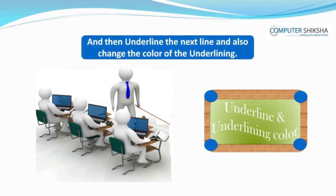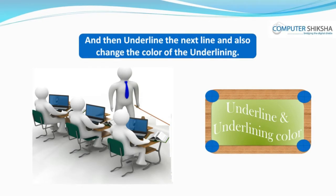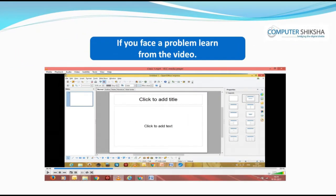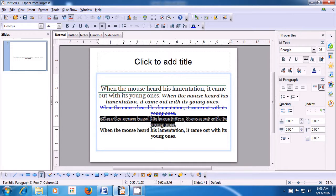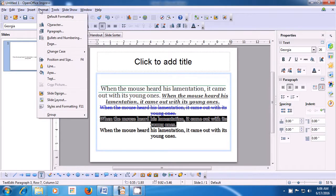Then underline the next line and also change the color of the underlining. If you face a problem, learn from the video. Let us now practice the use of underline. To apply the underline, first select the line on which you need to apply it. This time we are selecting the second-to-last line in our slide. Select it using the mouse, touchpad, or keyboard. After selecting, take your pointer to the Format menu and left-click.